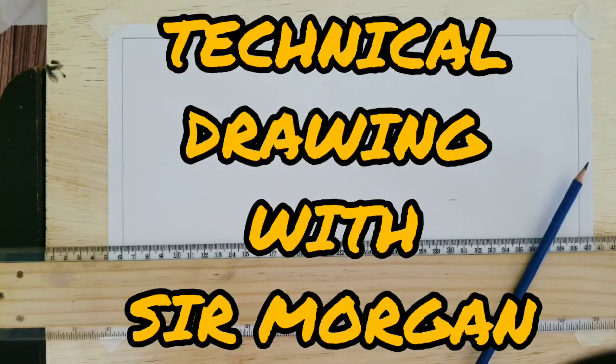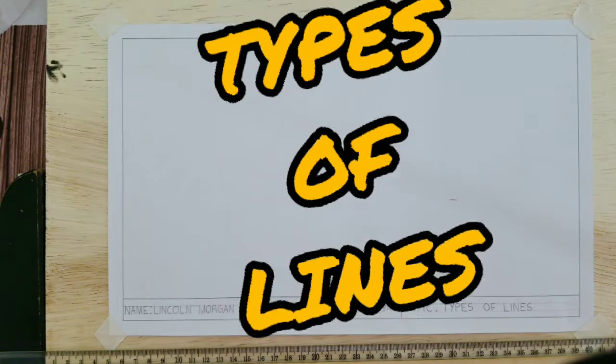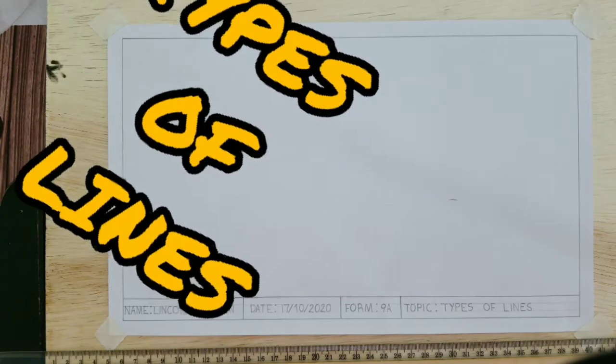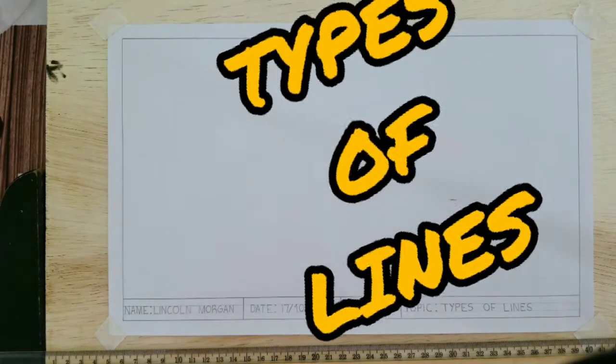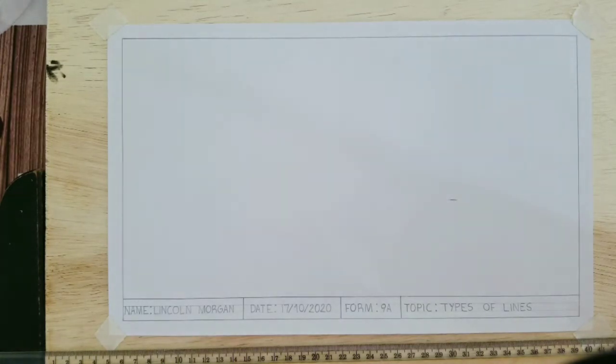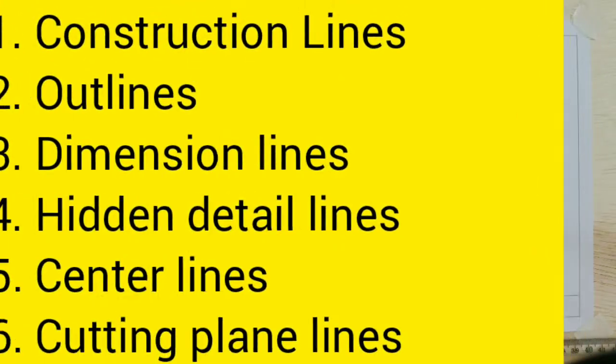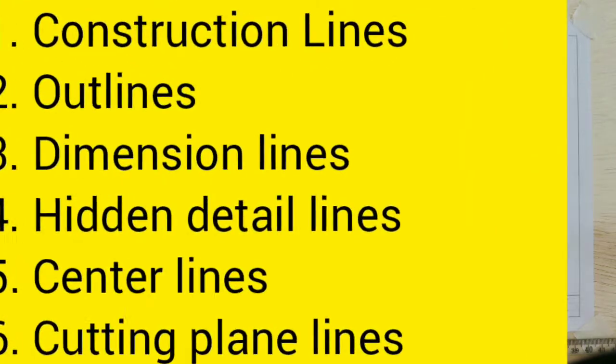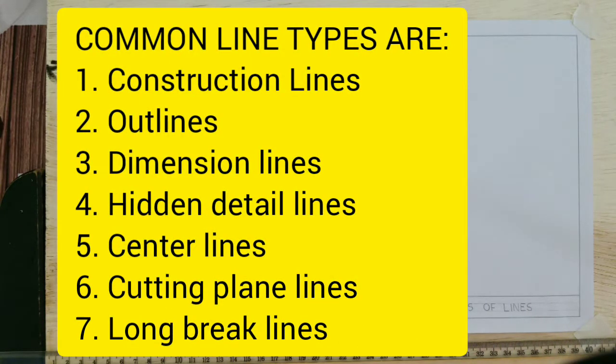Greetings everyone, Sir Morgan here from the technical department. The topic for today is types of lines. Just as in English class you use correct words, in technical drawing class you have to use the correct type of line. I'll be showing you about seven types of lines that exist in technical drawing. For the ninth grade level, you will mostly be using construction lines and outlines, which will be our first two lines today.